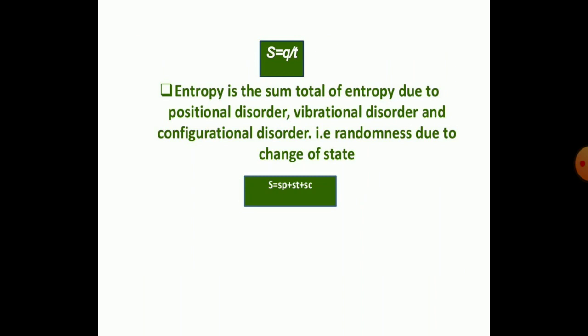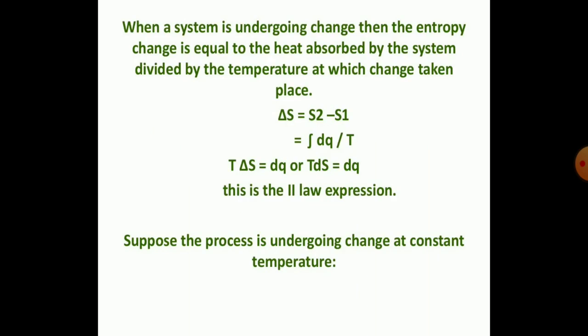Entropy is the sum of total entropy due to positional disorder, vibrational disorder, configurational disorder, and randomness due to change in state. When a system undergoes a change in entropy, it is equal to the heat absorbed by the system divided by the temperature at which the change takes place — that is, delta S equals S2 minus S1, and TdS equals dQ.